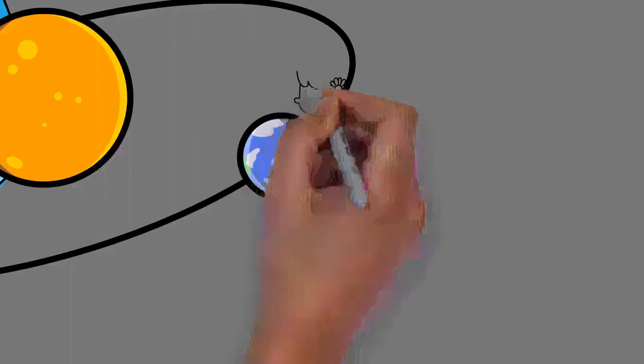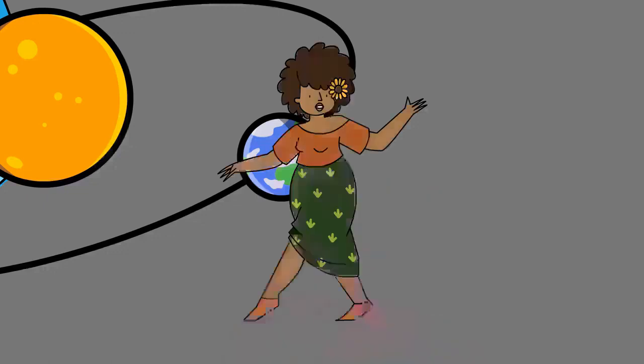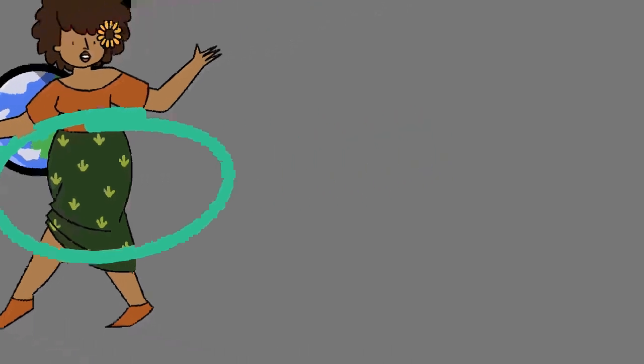Earth's axis of rotation is tilted with respect to the perpendicular to its orbital plane around the sun, producing seasons. Earth is orbited by one permanent natural satellite, the moon, which orbits Earth at 384,400 kilometers, 1.28 light seconds, and is roughly a quarter as wide as Earth.